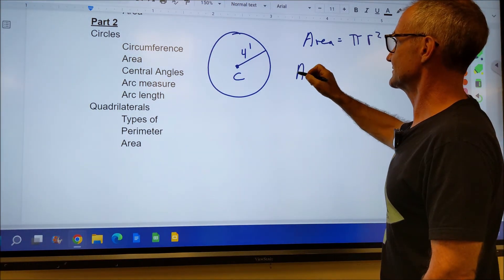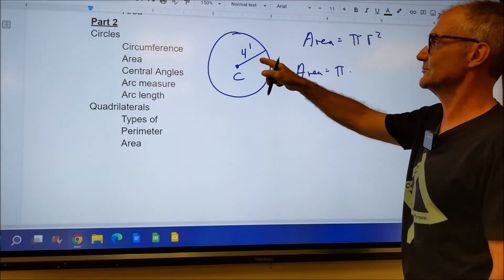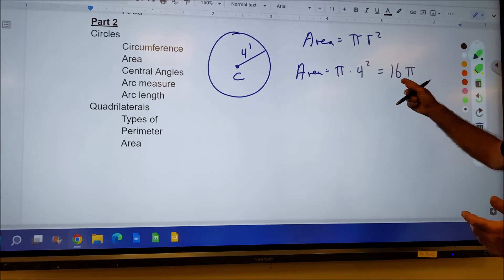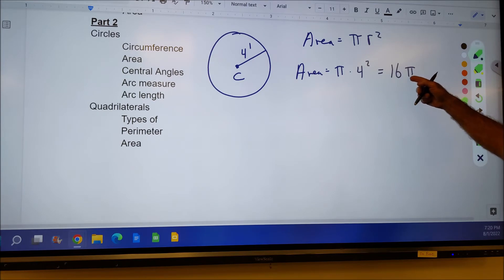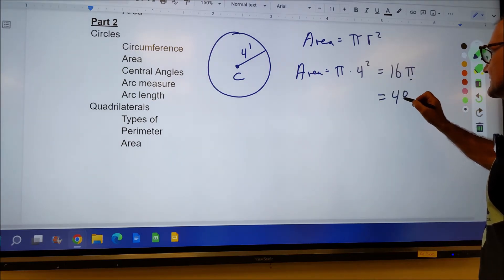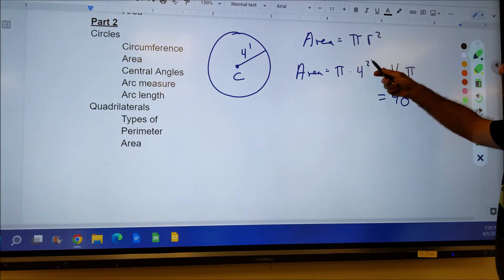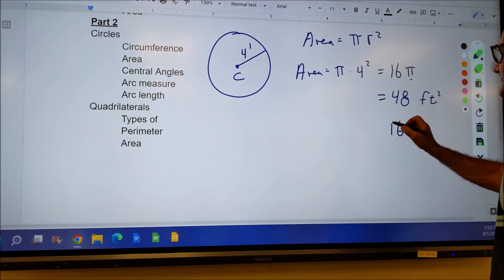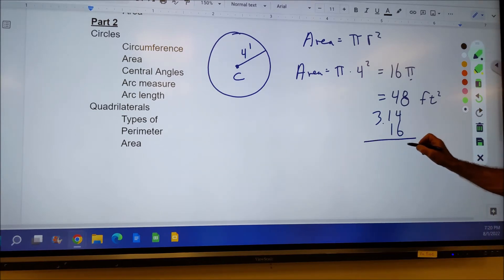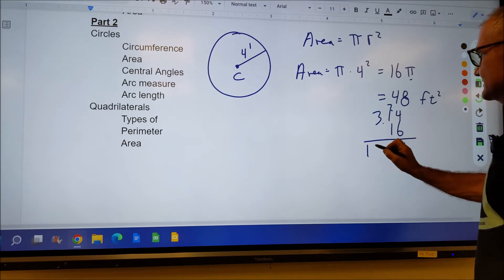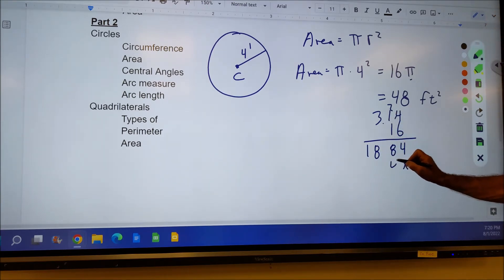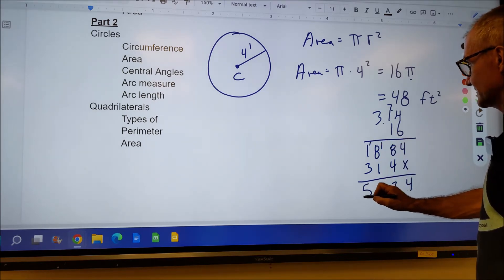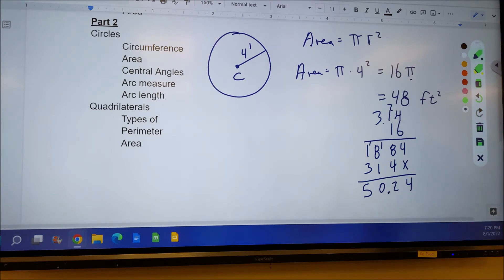So the area of that circle is going to be equal to pi, 3.14, times radius squared, 4 squared. 4 times 4 is 16, so 16 pi. That's sometimes a good answer, called an exact value. I could stick a 3 in there. 3 times 16 is 48 square feet. This is an approximation. I could do it a little more accurately by going 16 times 3.14, which equals 50.24 square feet. These are all correct answers. 16 pi is a correct answer. 48 square feet is approximate. 50.24 is a more exact answer, but it's still an approximation.